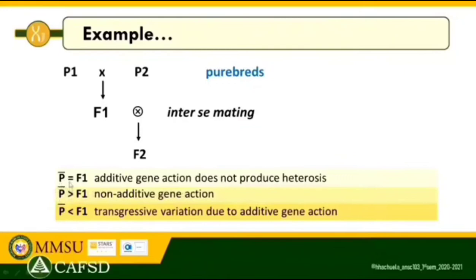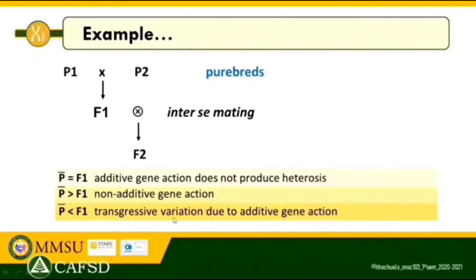Heterosis is the superiority of crossbred animals — in this case F1 — over the purebreds or parents with respect to a particular trait. Additive gene action does not produce heterosis because polygenic traits governed by additive gene action are not improved by crossbreeding. Scenario two: the superiority of the purebred parents over F1 is due to non-additive gene action — when purebred parents perform better than their F1, the trait is governed by non-additive genes because the performances of P1 and P2 do not add up to produce the performance of F1.